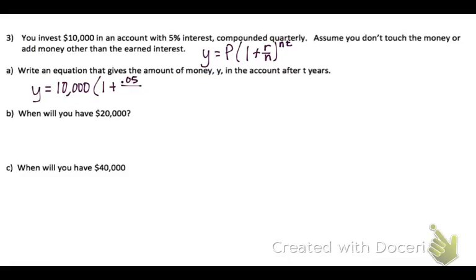Our N is how often we compound and it says that we compound quarterly at the beginning of the problem. So N is going to be 4. And then we have N times T. So anytime you write an equation you leave it as Y and T.